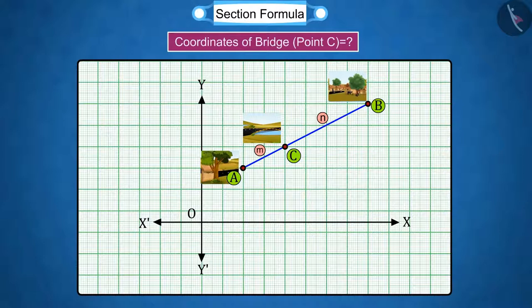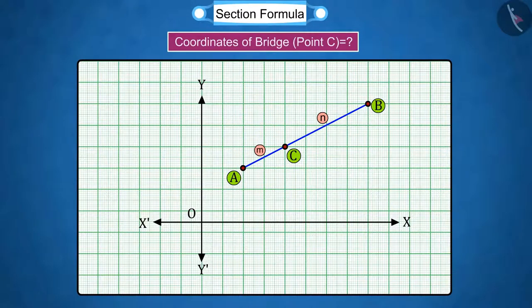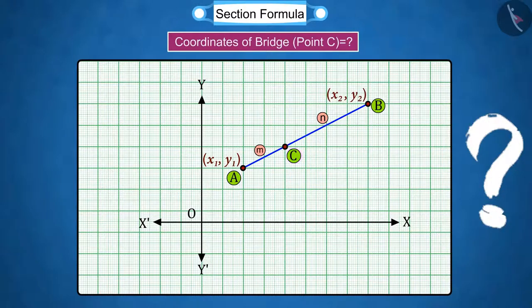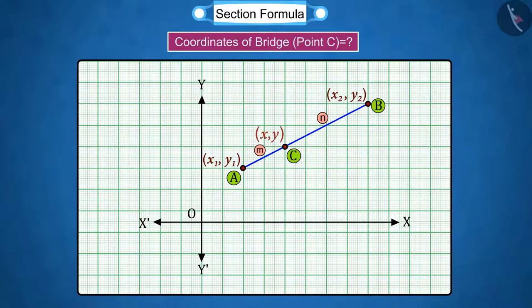Let's first represent the given situation in coordinates. Let us assume O as the origin point and OX and OY are X axis and Y axis respectively, where the coordinates of A are X1, Y1 and coordinates of B are X2, Y2. Let X, Y be the coordinates of point C of the bridge which divides AB in the ratio M:N.